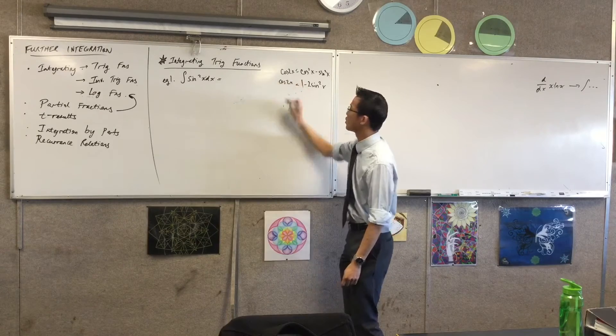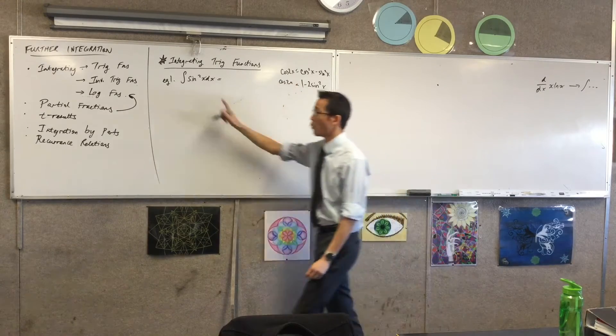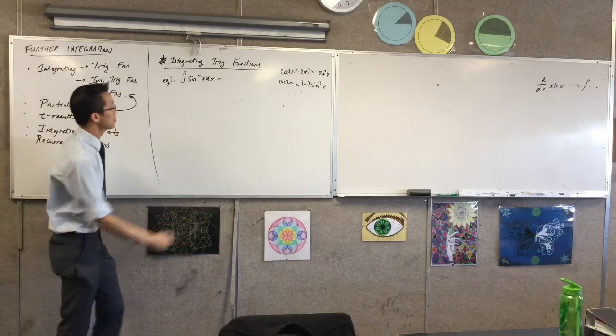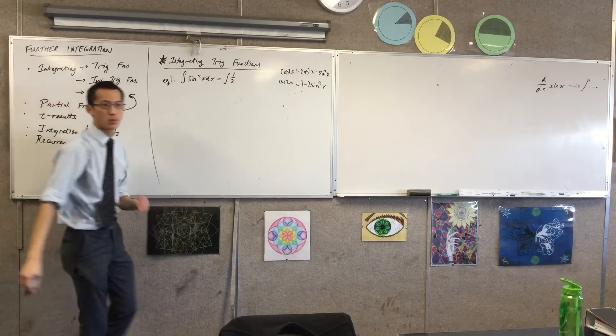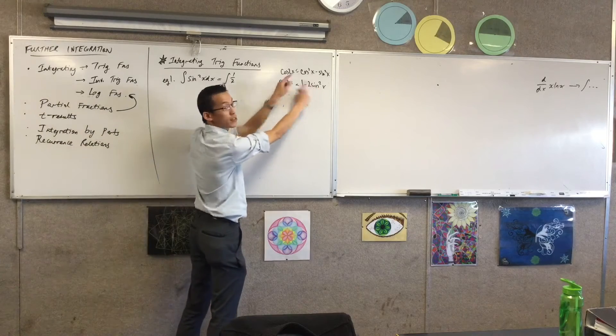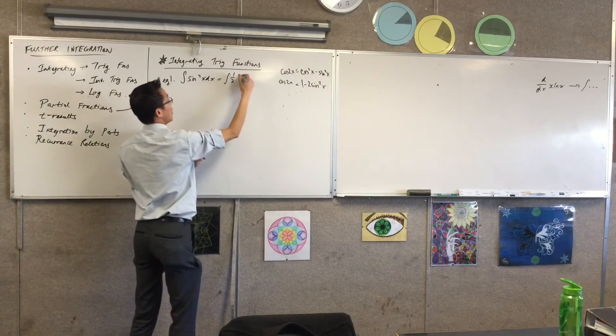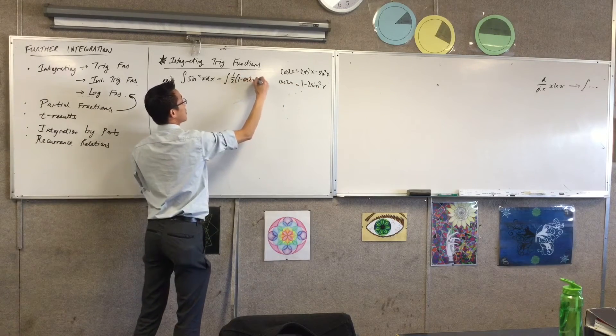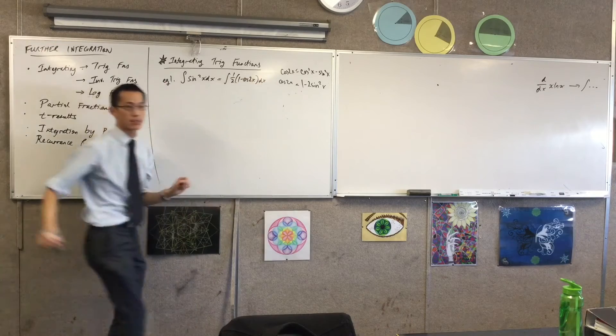And you can see here, just by a simple rearrangement, that what I'm going to get over here is the integral of a half times, what? 1 minus cos 2x. 1 minus cos 2x. These guys are basically swapping places. 1 minus cos 2x. Happy with that?